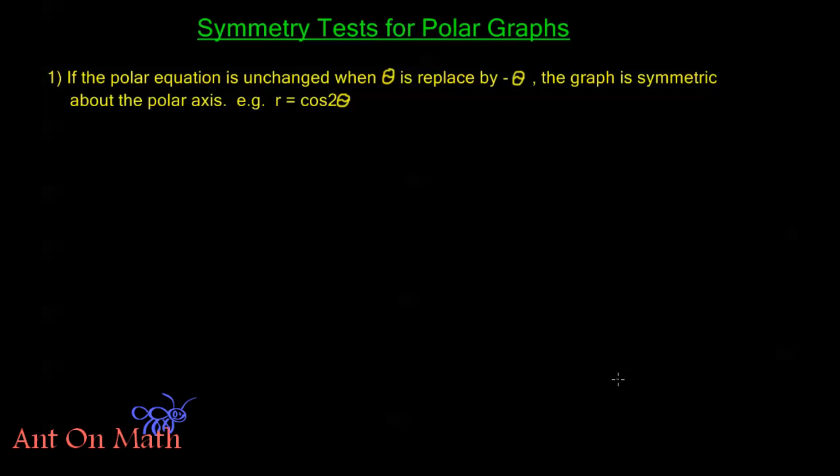Let's say I draw my polar axis over here. So let's have this be our polar axis. And what's symmetric about the polar axis? What that means is because of the way the polar axis is drawn, we kind of associate that with the x-axis, don't we?